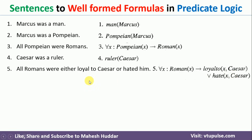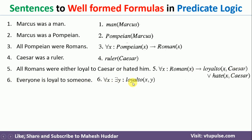Coming back to the next fact: 'Everyone is loyal to someone.' The loyalTo predicate takes two parameters — if I take X loyal to Y. Everyone means for all X, and someone means there exists Y. So we write: ∀X ∃Y: loyalTo(X, Y). The quantifier for X is 'for all' because everyone is written, and for Y it is 'there exists' because Y is someone — meaning X is loyal to one or more persons.